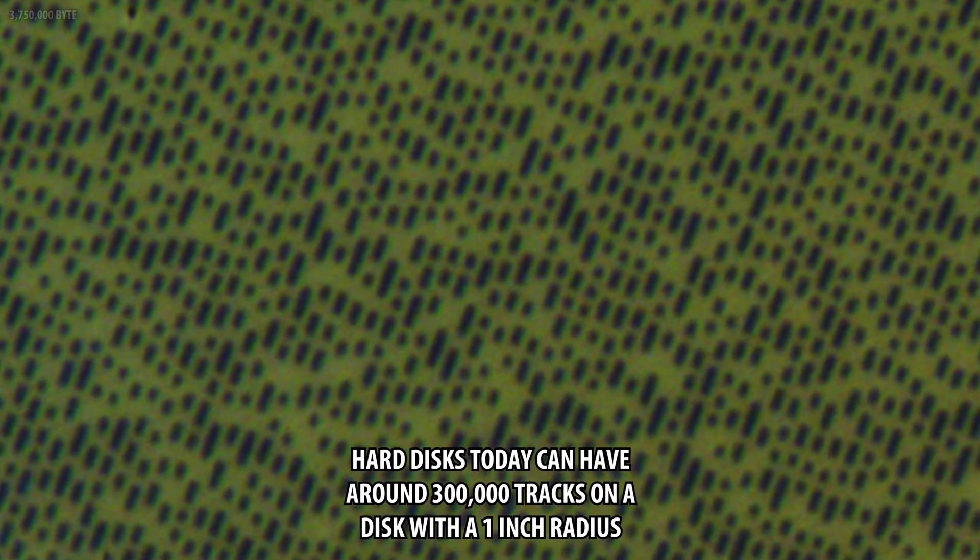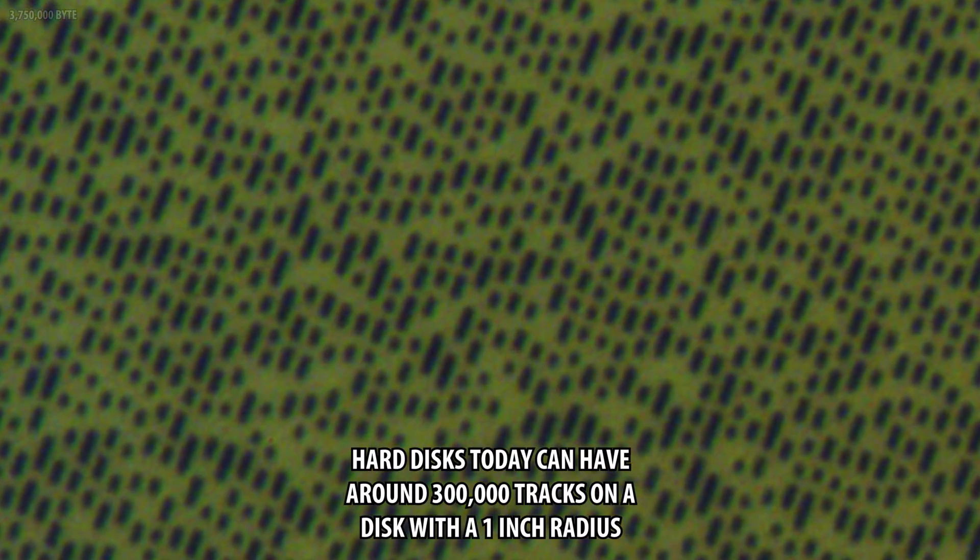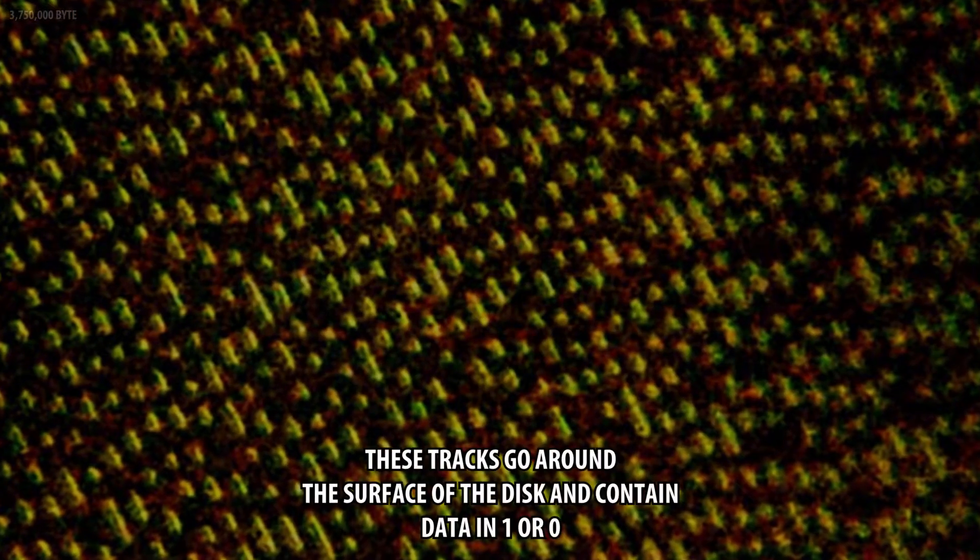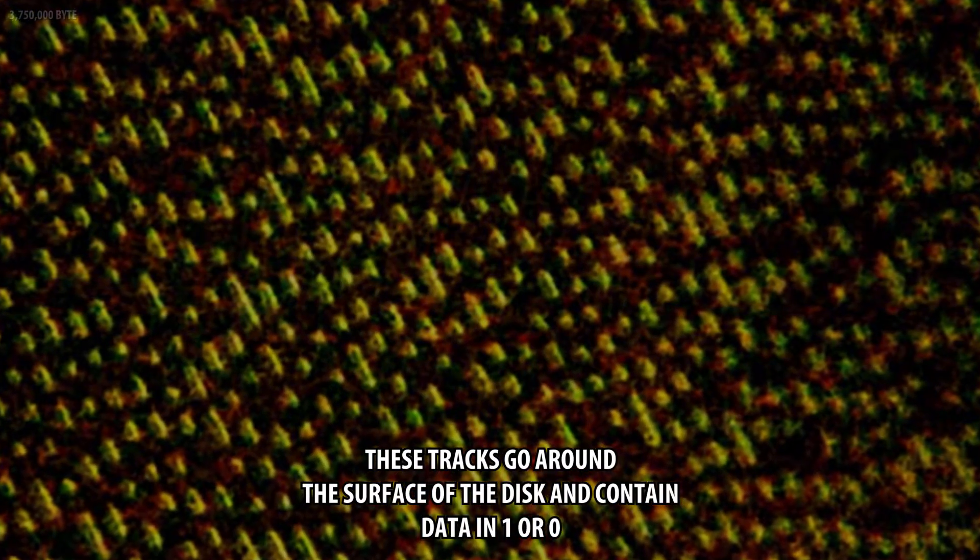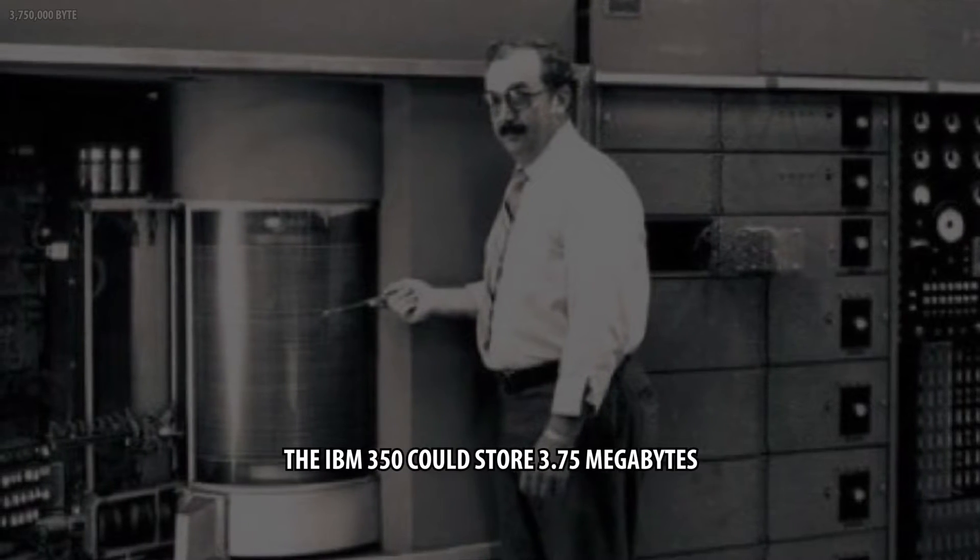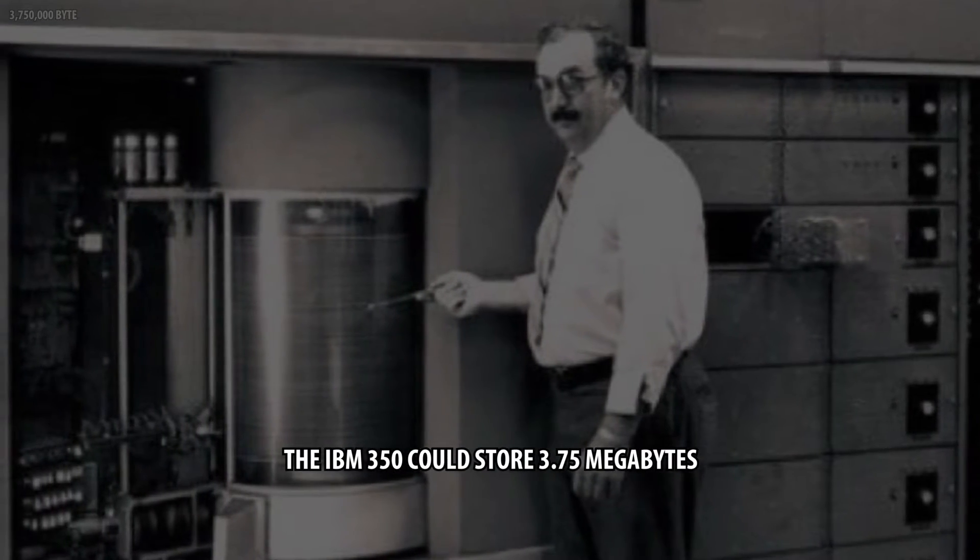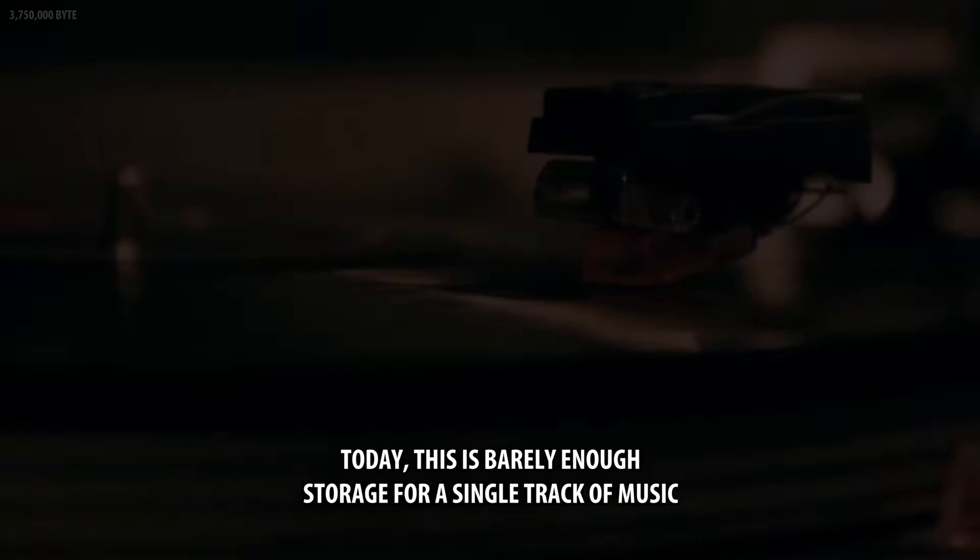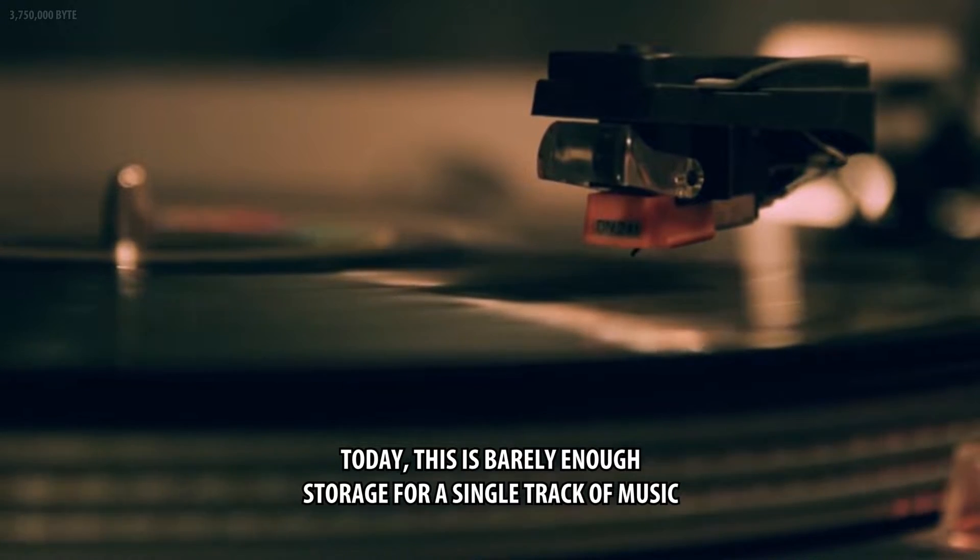Hard disks today can have around 300,000 tracks on a disk with a 1-inch radius. These tracks go around the surface of the disk and contain data in 1 or 0. The IBM 350 could store 3.7 megabytes. Today this is barely enough storage for a single track of music.